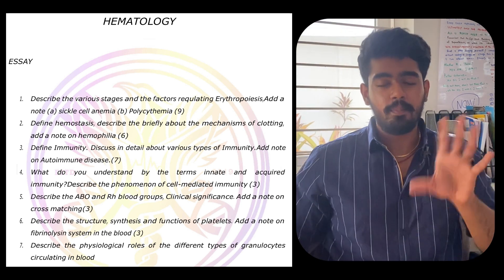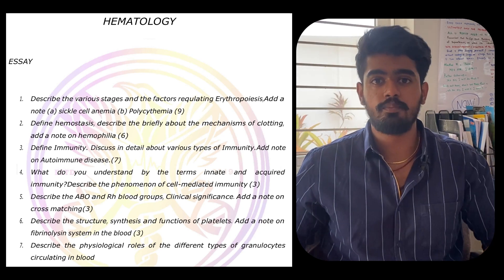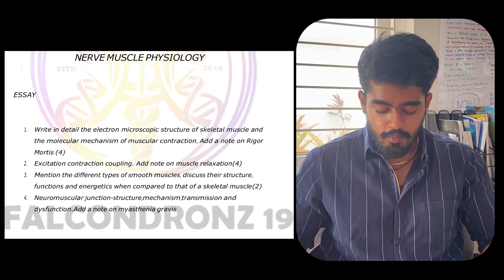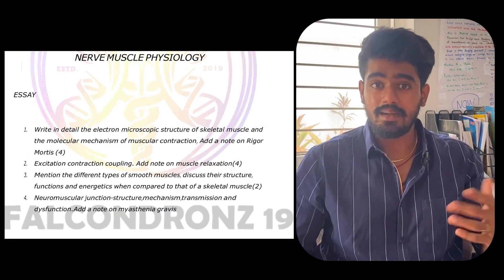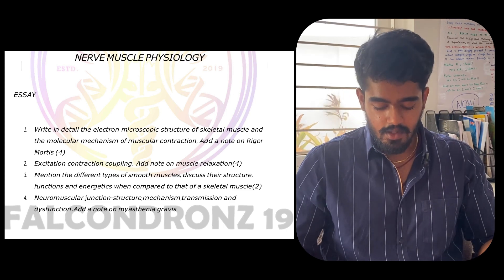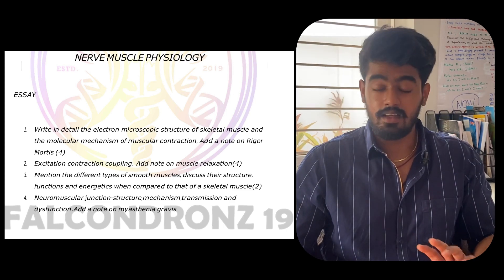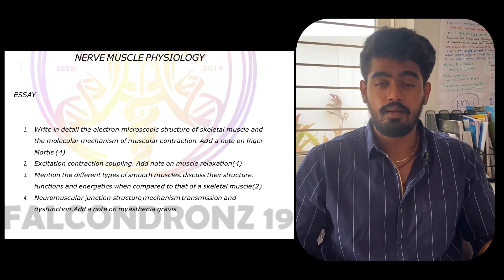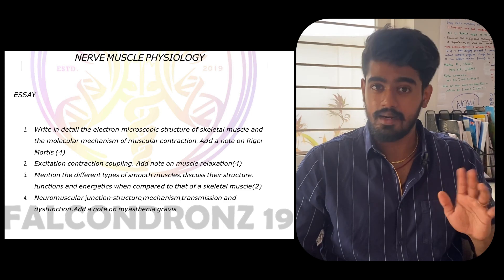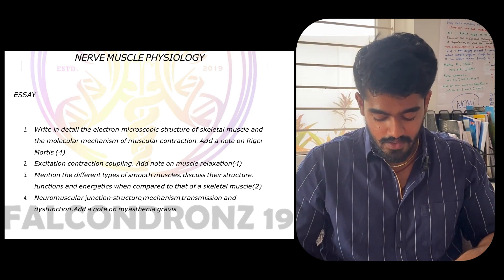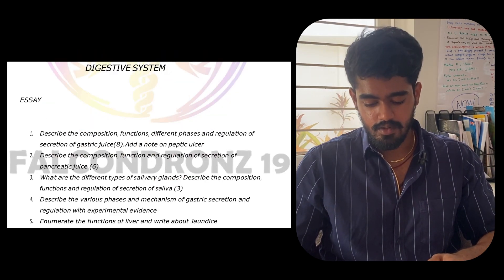Complete the essay first — then automatically the short notes will be taken care of. For nerve and muscle physiology, the important topics are: rigor mortis, muscle contractions, excitation-contraction coupling — which is crazy important, I know it's super hard to remember but it is very important — skeletal muscle, and neuromuscular junction.